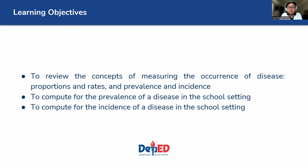Our learning objectives for this module are the following. First, we will review the concepts of measuring the occurrence of disease, which refer to proportions and rates, specifically prevalence and incidence. This was mentioned in previous modules, but we will go in more detail here. Second, we will compute for the prevalence of a disease in the school setting. And third, compute for the incidence of a disease in a school setting.